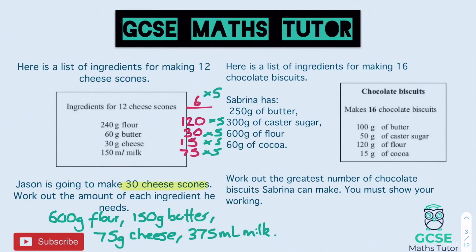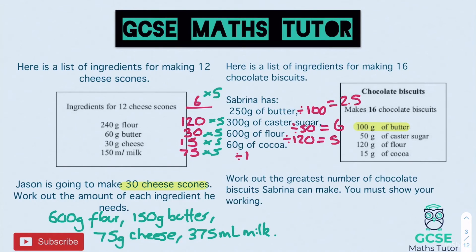The second practice question: a recipe makes 16 chocolate biscuits. Sabrina has set amounts of each ingredient — find the greatest number she can make. Checking each ingredient: butter — 250 ÷ 100 = 2.5; sugar — 300 ÷ 50 = 6; flour — 600 ÷ 120 = 5; chocolate — 60 ÷ 15 = 4. The limiting value is 2.5 from the butter.